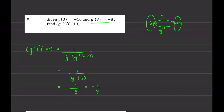Again, I'm choosing problems where functions are not explicitly given, and without knowing this relationship you can't solve the question. This is much easier than first finding the inverse of the function, differentiating it, and then plugging in. Instead, figure out what g⁻¹(−10) is — that's just 3 — then plug 3 into the derivative of g, and here we were given that directly.